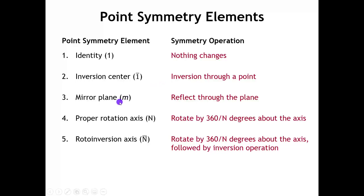We have the mirror plane, which is denoted by the symbol M. The mirror plane, which should be very familiar to all of you, is just a reflection through a plane. And then we have two types of rotation axes: proper rotation axes and improper rotation axes, which in the Hermann-Mauguin system used for crystallography are rotoinversion axes. We'll talk about each of those in turn.